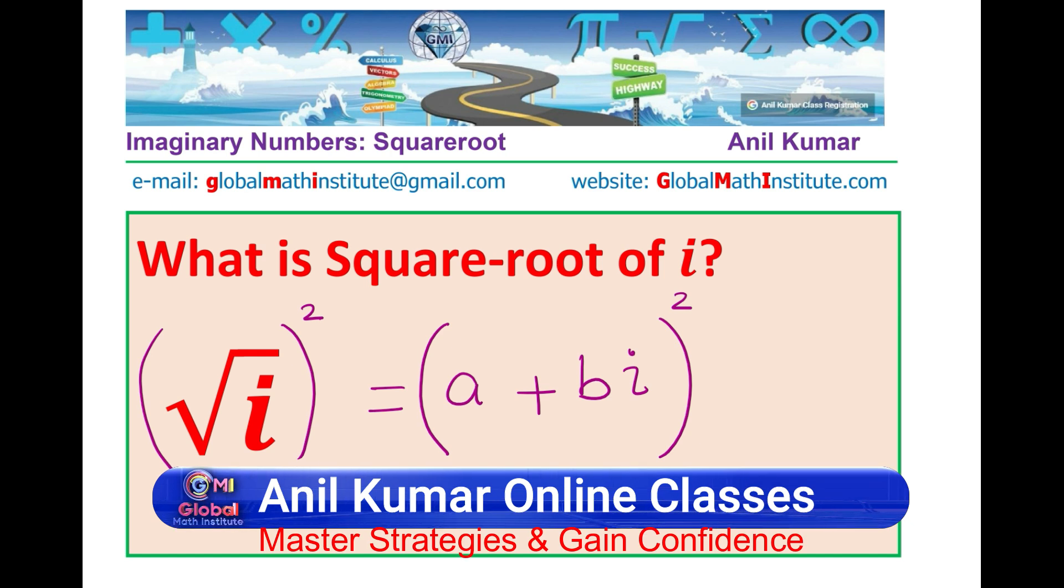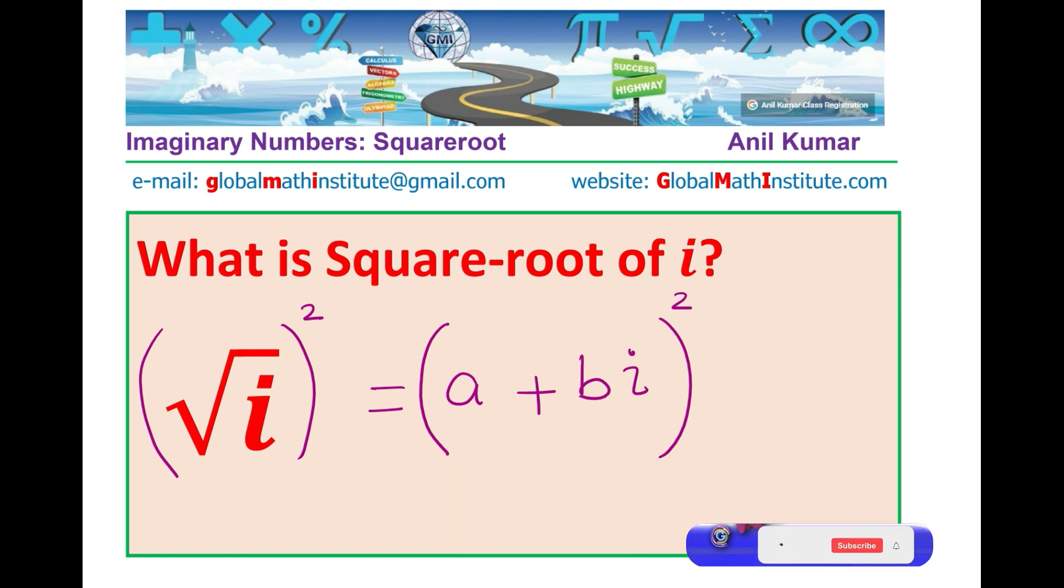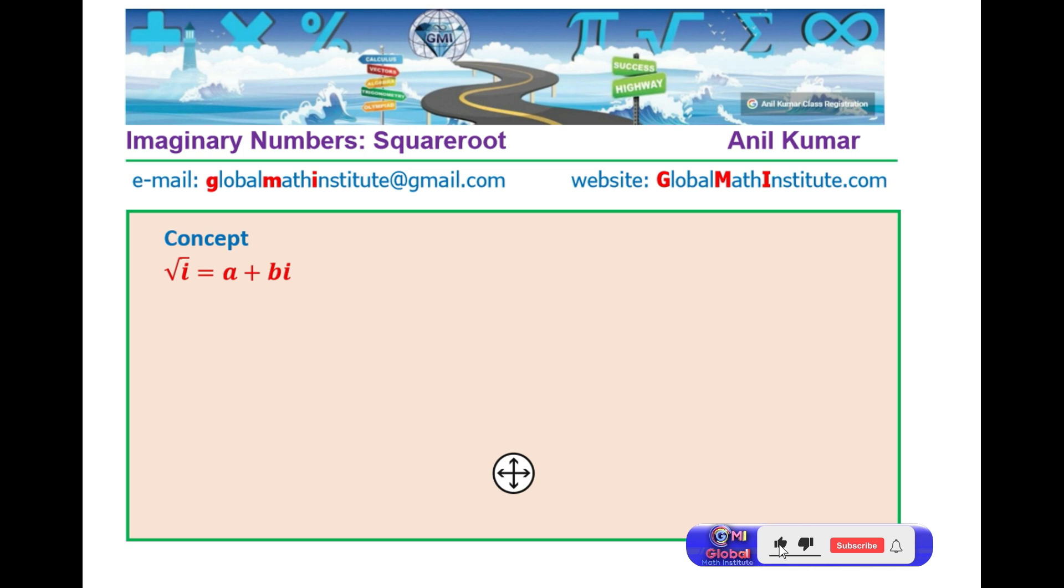I hope that helps. So, you can pause the video, answer the question, and then look into my suggestions. So, let us begin. Here is square root of a plus bi. So, when I square both sides, what do I get? So, what I am doing here is just squaring both sides.